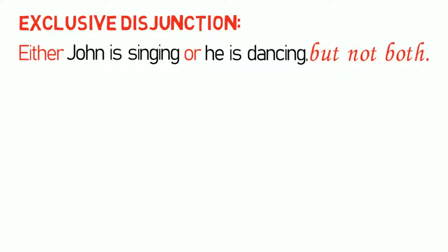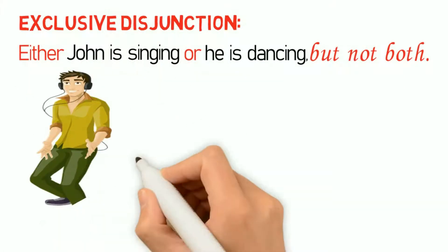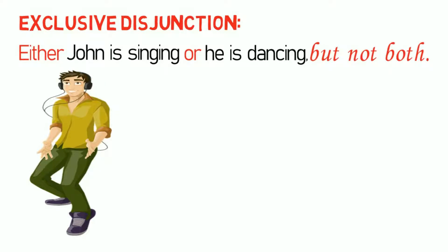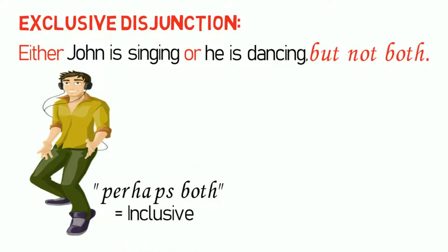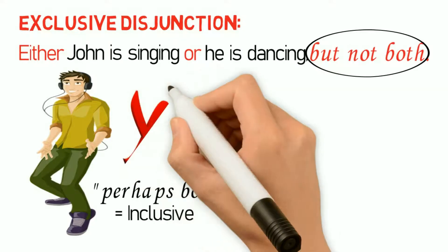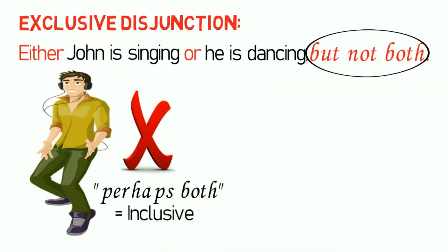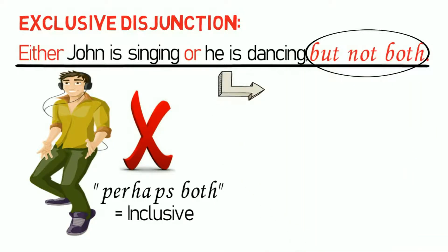This example is clearly an exclusive disjunction because of the words 'but not both.' Please note that it is possible for John to be singing and dancing at the same time — hence perhaps both, or inclusive — but because of the qualifier 'but not both,' which clearly emphasizes the point that John is not singing and dancing at the same time, the statement is clearly an exclusive one.